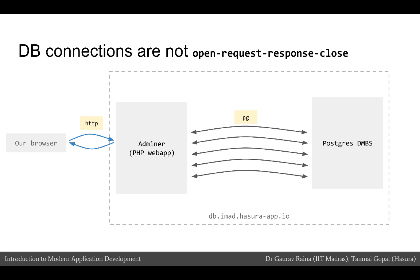Let us now look at the connection aspect and database connections. When our browser was making an HTTP connection to Adminer — the web app we used in previous modules to manage the database — Adminer was making actual requests to the Postgres DBMS server to execute queries and returning HTTP responses to our browser. It is important to understand that database connections are not like HTTP connections at all. Whenever our browser makes an HTTP connection, it opens a new connection, makes an HTTP request, the server responds, and the browser closes the connection. An HTTP connection is: open, request, response, close — each request and response is independent.